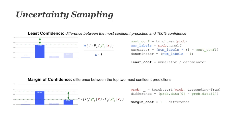The most commonly used uncertainty sampling method is least confident sampling — simply looking at the difference between the most confident prediction and 100% confidence. Here our most confident prediction is 64%, and because there are four labels the minimum possible confidence is 25%. We use that minimum as a normalizing denominator to give a 0-to-1 range, where 1 is most uncertain. I highly recommend normalizing all methods to a 0-to-1 range, otherwise you'll get different ranges from different methods and run into trouble in downstream processing.